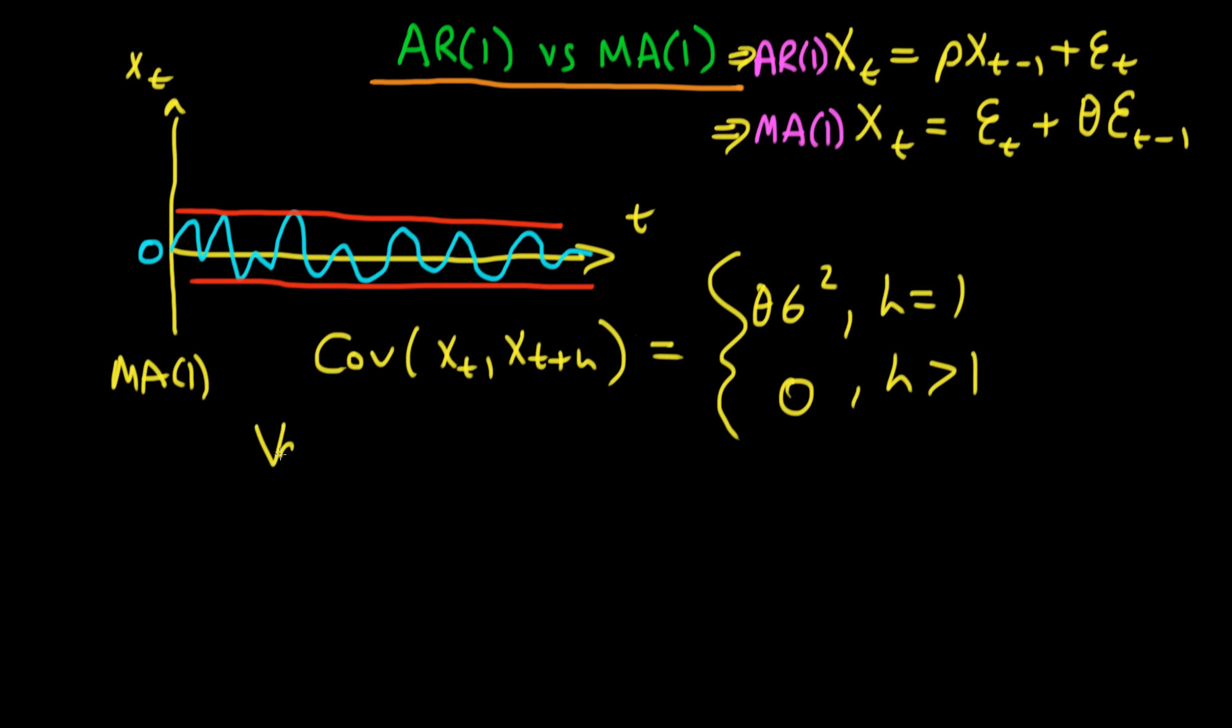Furthermore, we derived the variance of our process. The variance of X_t was just equal to σ²(1 + θ²). That was just what we derived before.